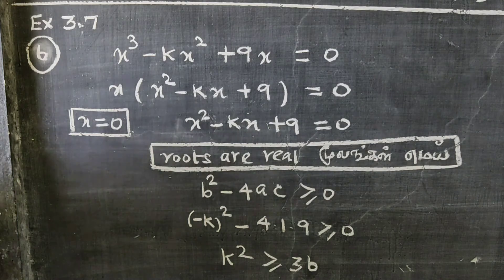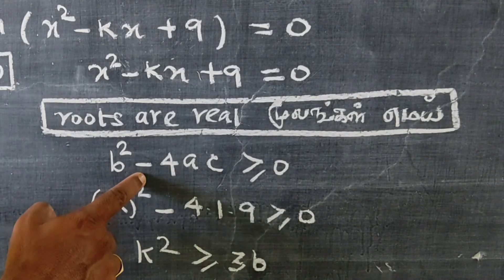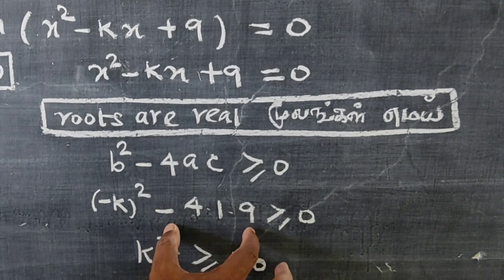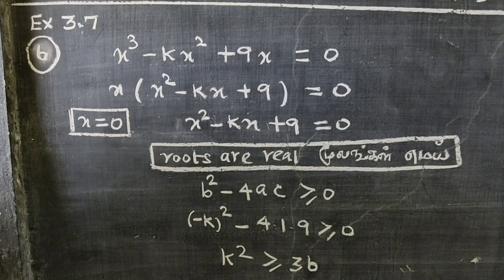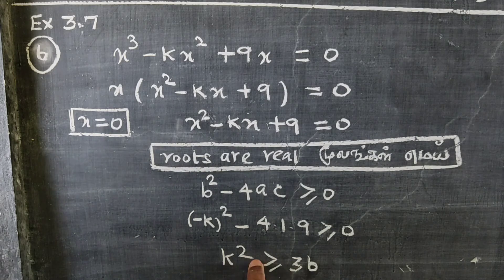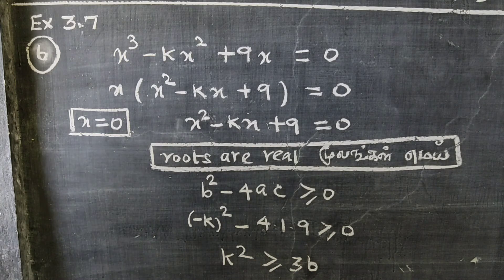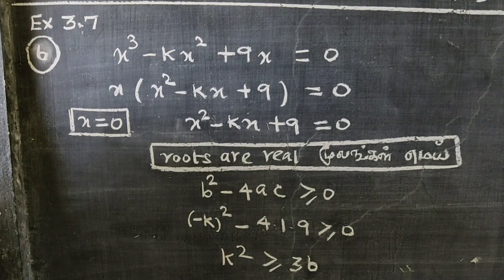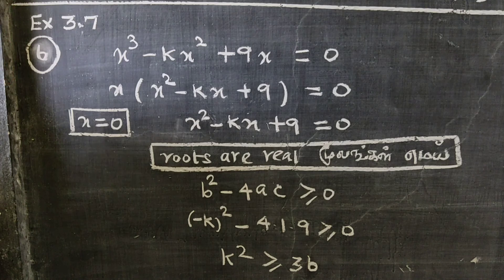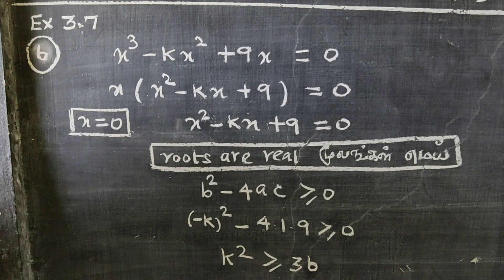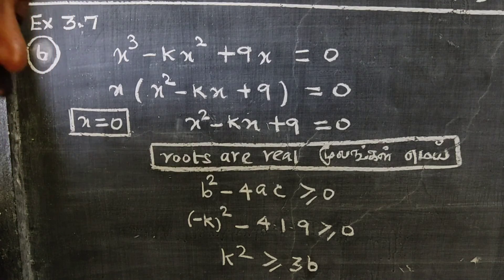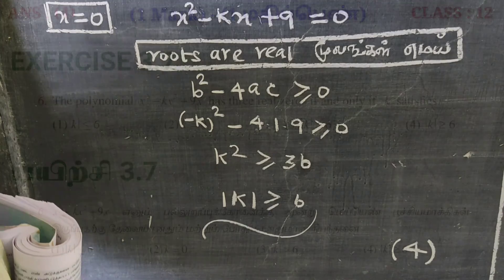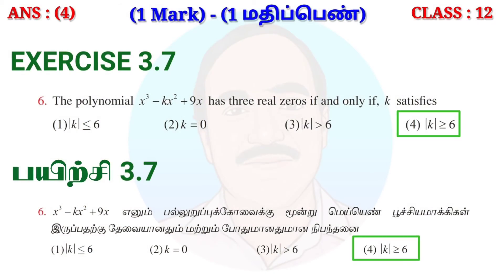Computing the discriminant for x² - kx + 9 = 0: (-k)² - 4(1)(9) ≥ 0, giving k² ≥ 36, so |k| ≥ 6. The fourth option is correct.